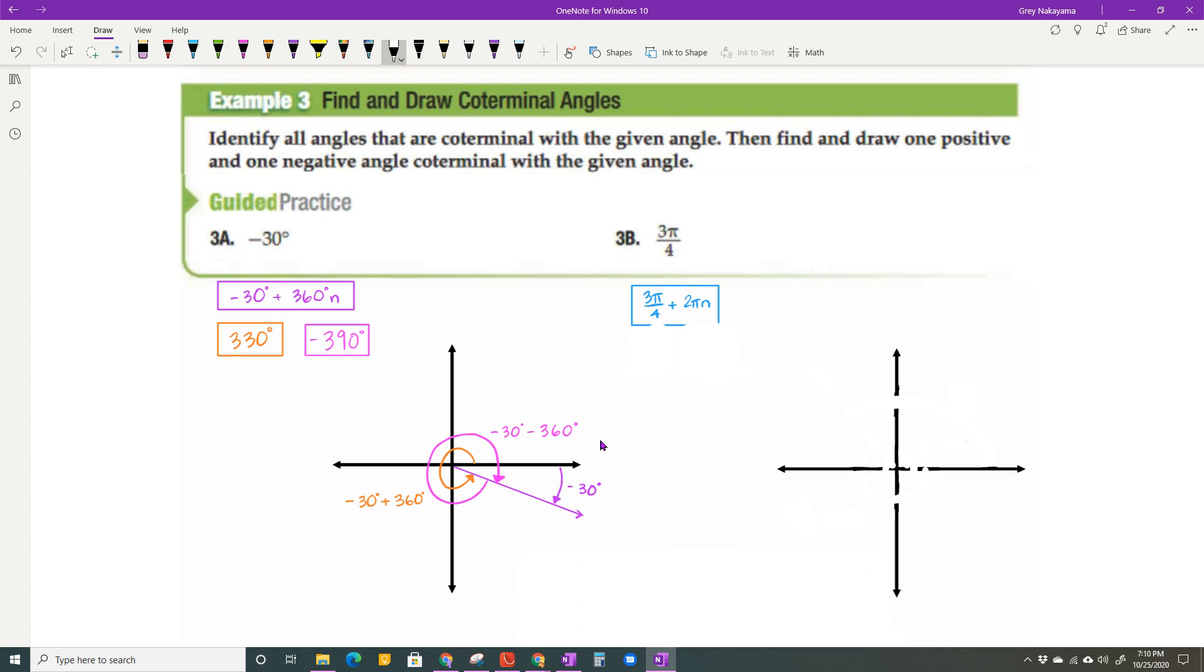Now, over here on 3b, where I have 3 pi over 4. 3 pi over 4, I know, is about right there. So that's going to give me 3 pi over 4. Where's my 3 pi over 4? There it is.